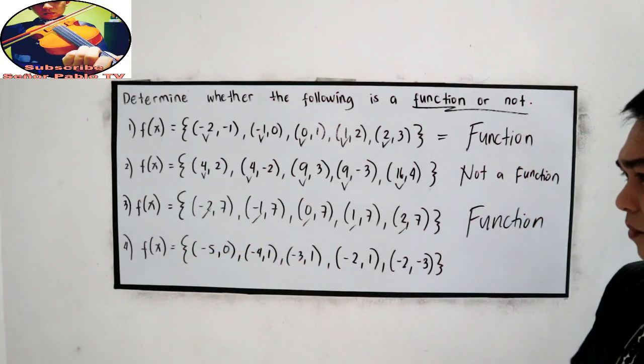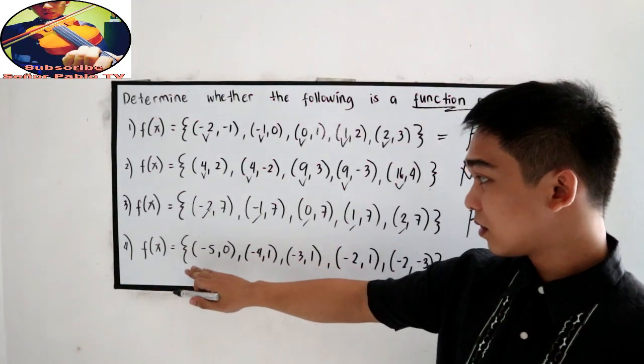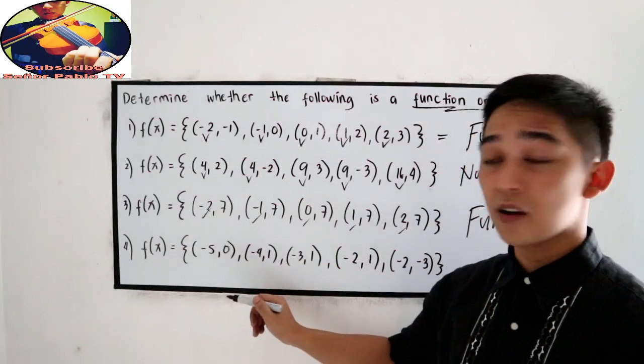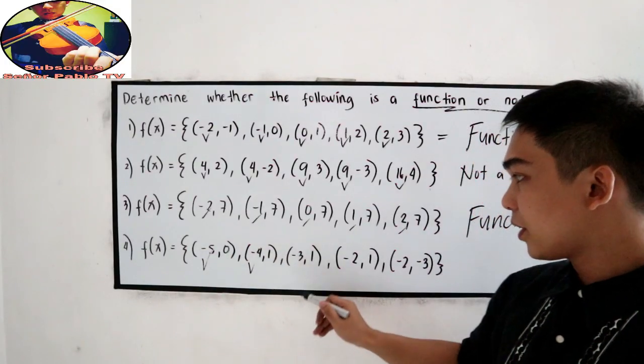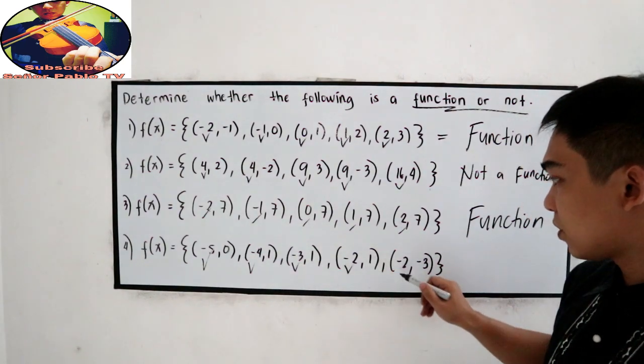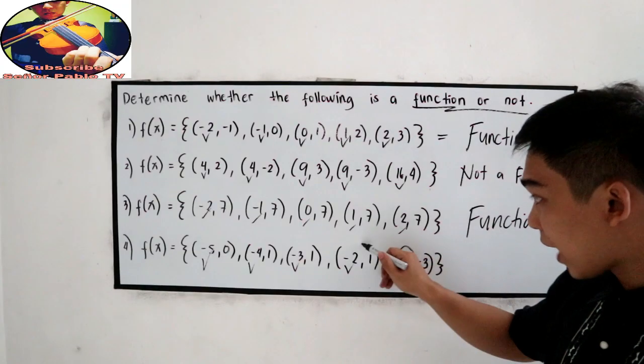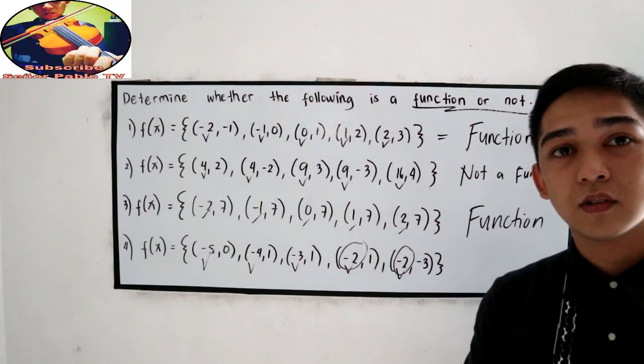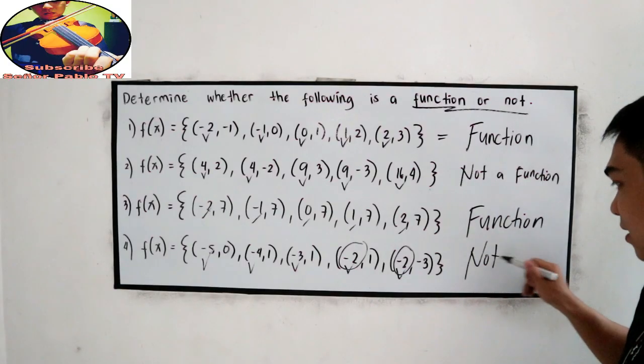Next. Number 4, m of x. Checking of the abscissas. Negative 5, negative 4, negative 3, negative 2, negative 2. So, we have negative 2 and negative 2. That means, it is not a function.